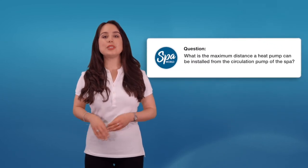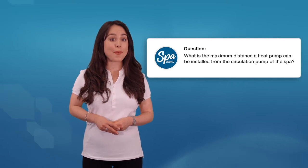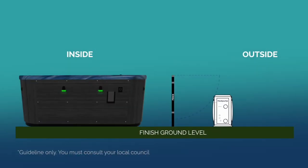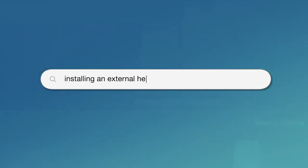What is the maximum distance a heat pump can be installed from the circulation pump of the spa? We recommend that the distance between the heat pump and circulation pump should be no greater than 3 metres. The height distance between the two pumps should not be any greater than 1 metre. And to learn more, we recommend that you read this article.